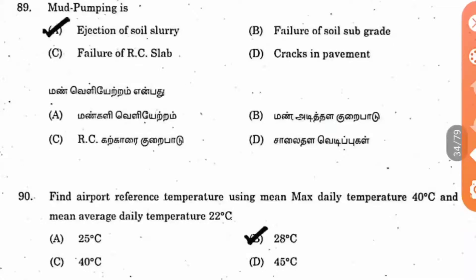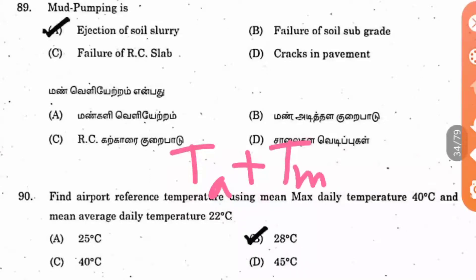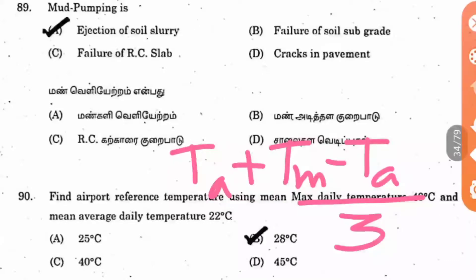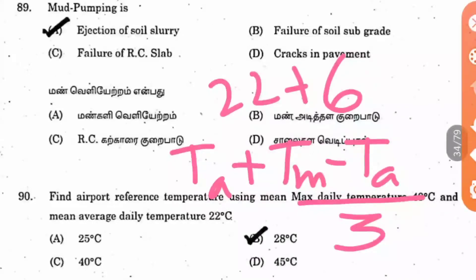Question 90: Find the airport reference temperature using mean maximum daily temperature of 40°C and mean average of 22°C. The formula is: T_A + (T_M − T_A) / 3, where T_M is the maximum temperature and T_A is the average temperature. So: 22 + (40 − 22) / 3 = 22 + 18/3 = 22 + 6 = 28°C. The answer is 28 degrees Celsius.